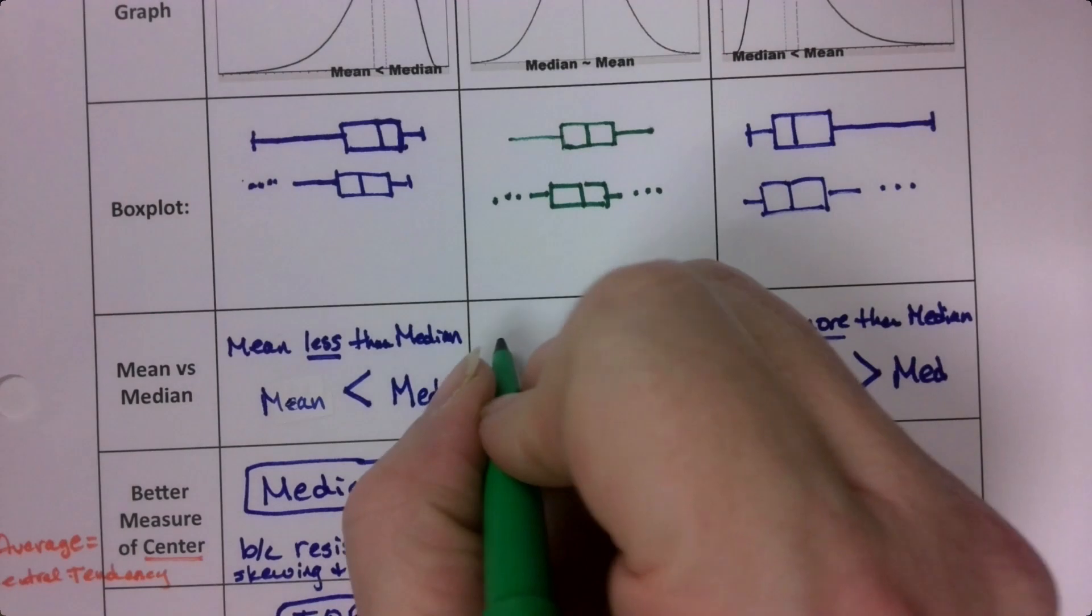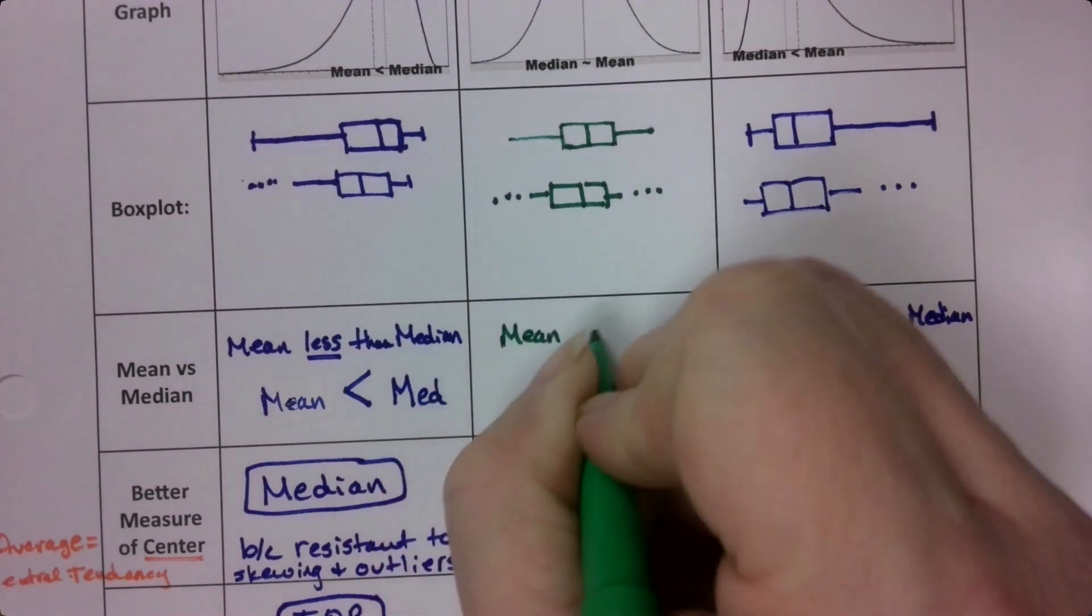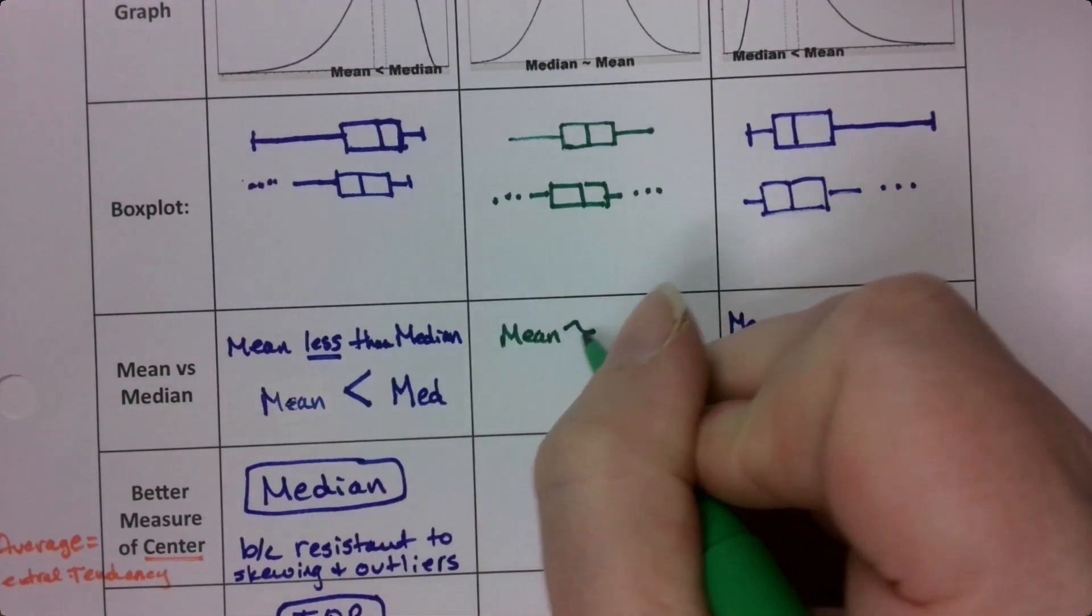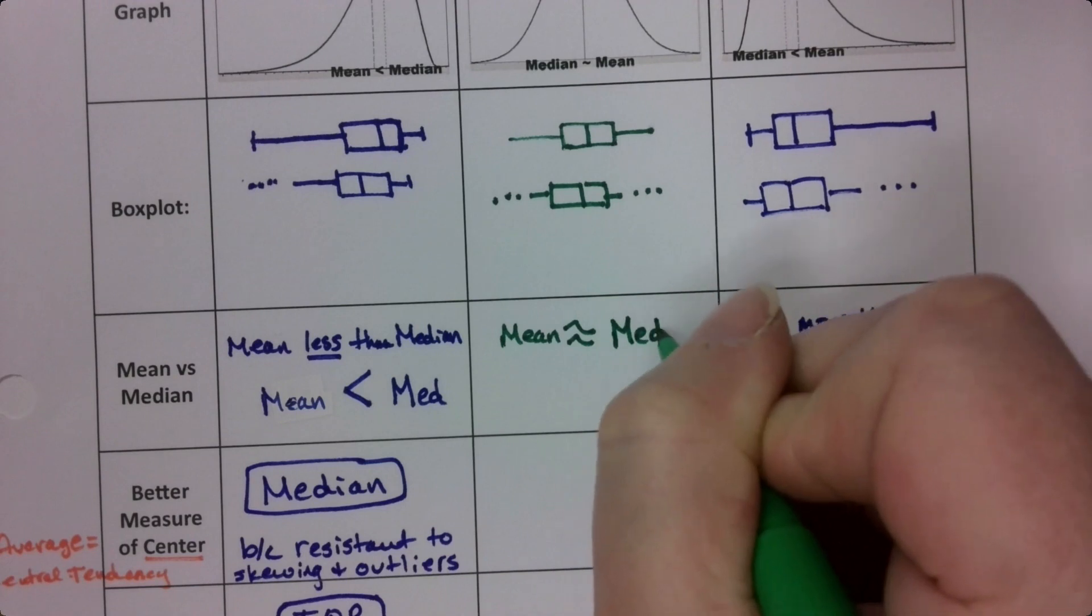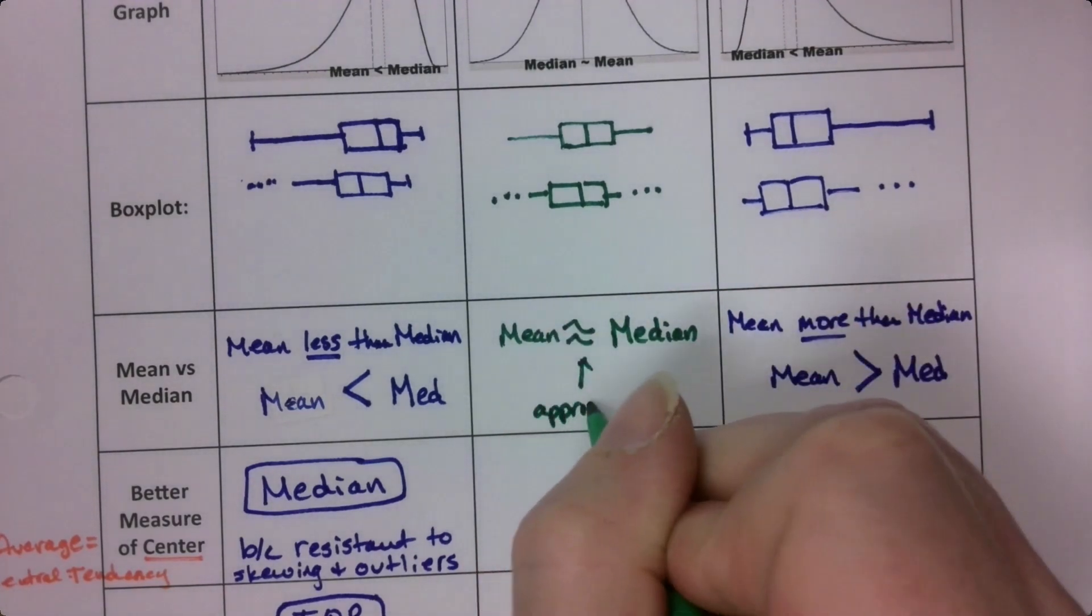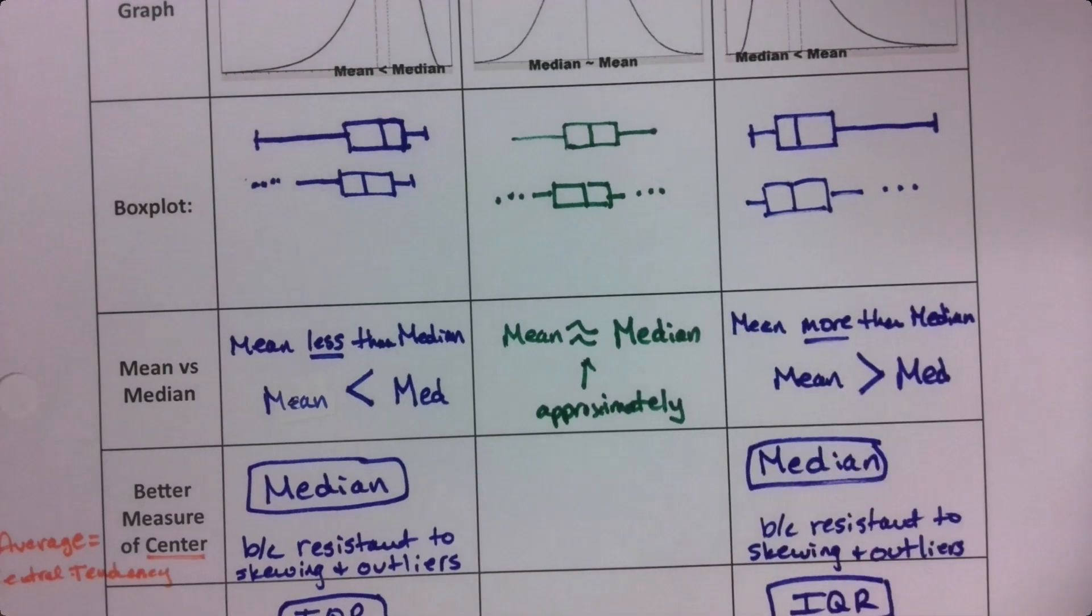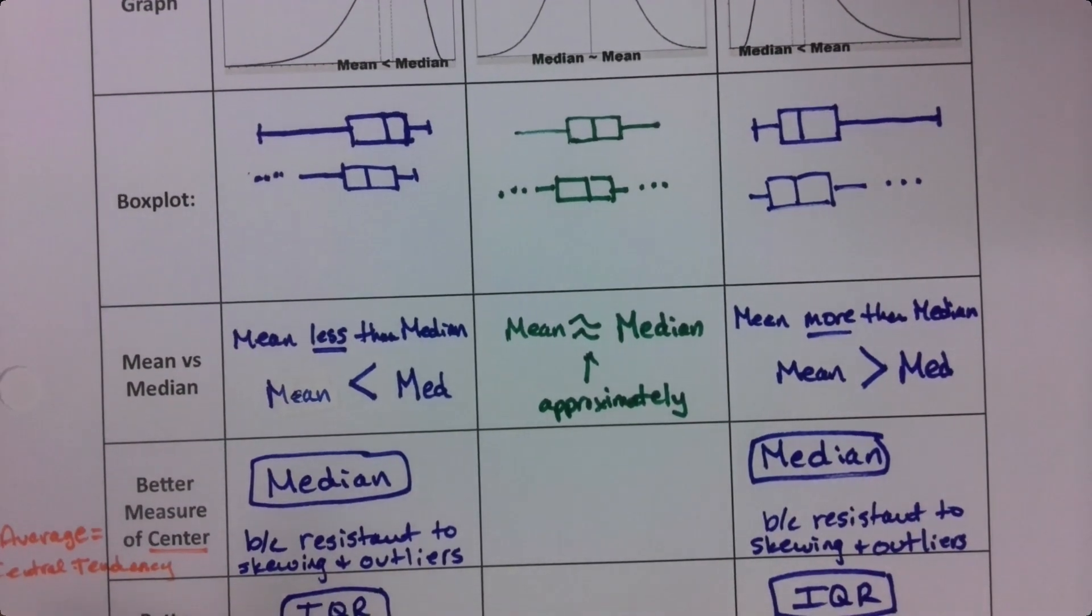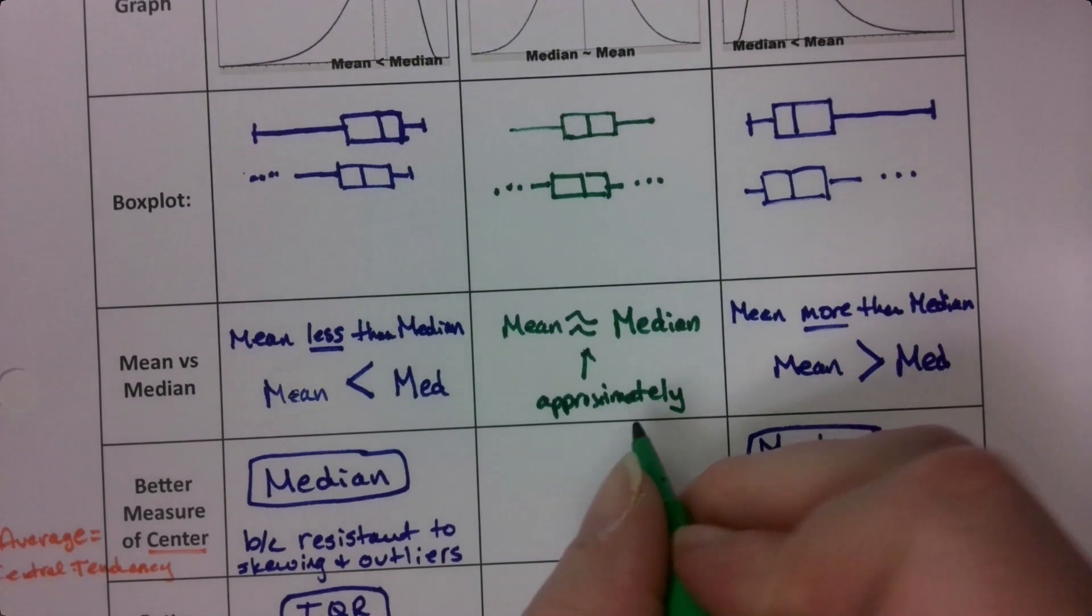All right. So that means that the mean is basically the same as the median. That's a symbol for approximately. It means they're not exactly the same, but they'll be real close. So they're approximately the same.